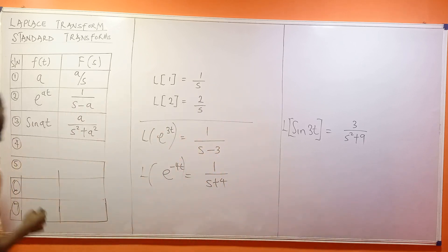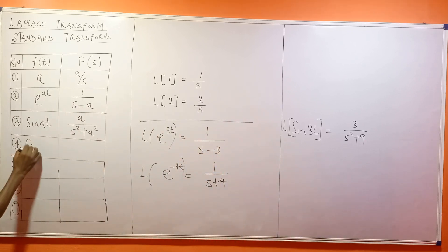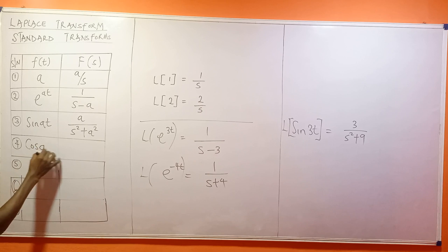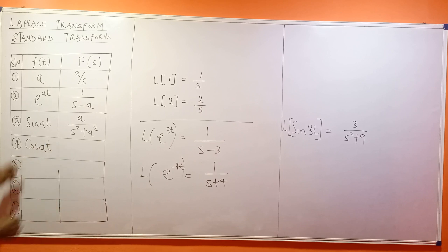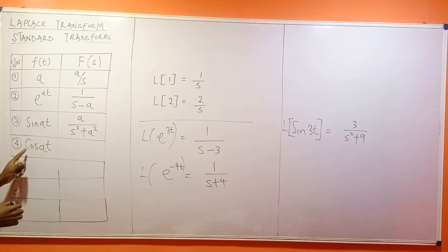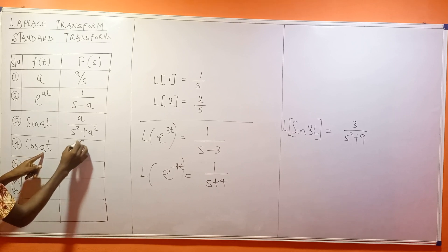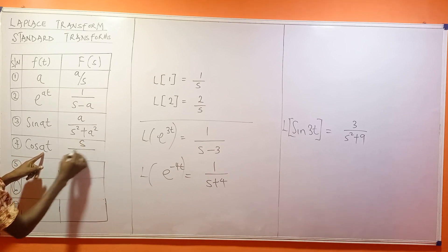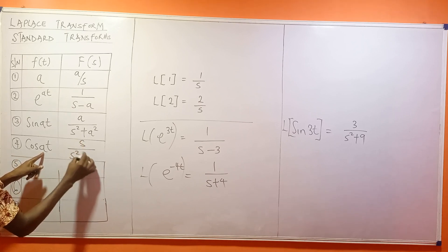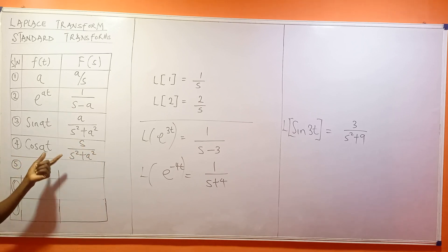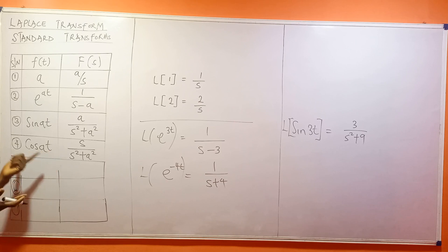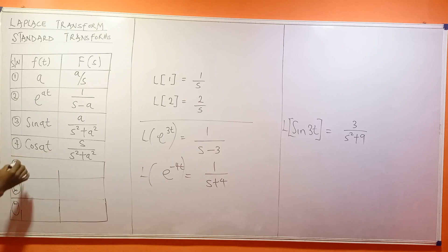Now we have cos(AT). sin(AT) and cos(AT) are quite similar. The Laplace transform of cos(AT) is S over S squared plus A squared. So it's easy to evaluate.